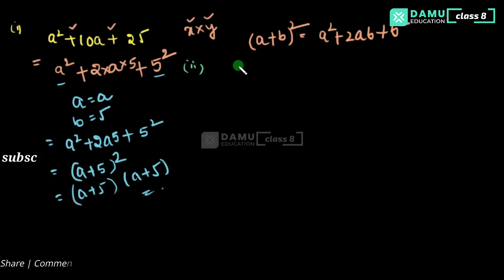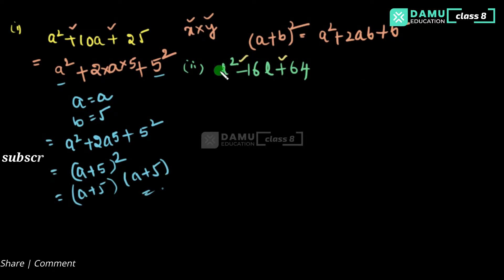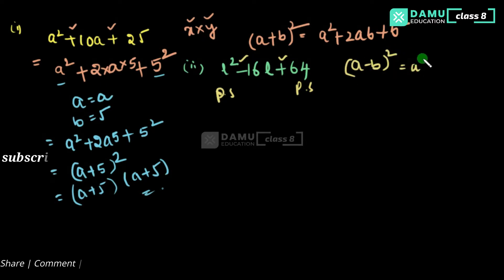Next question — the second one: l squared minus 16l plus 64. Here one sign is minus and the other is plus. Since 64 is a perfect square and l squared is also a perfect square, and with one minus and one plus, this is definitely the (a − b) whole square formula.